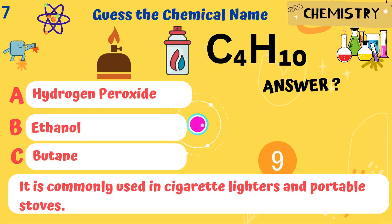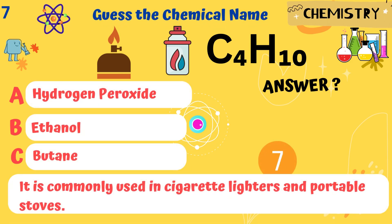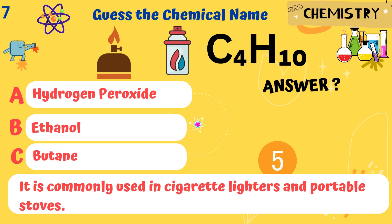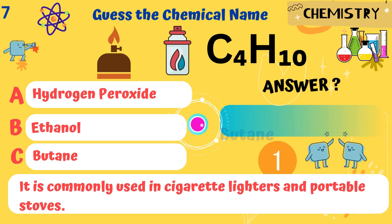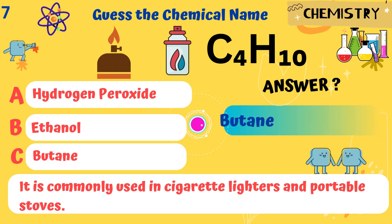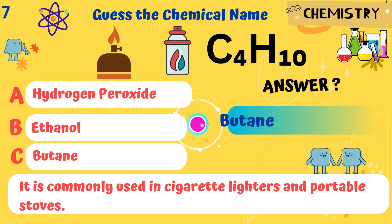C4H10. It is commonly used in cigarette lighters and portable stoves. Answer: Butane.